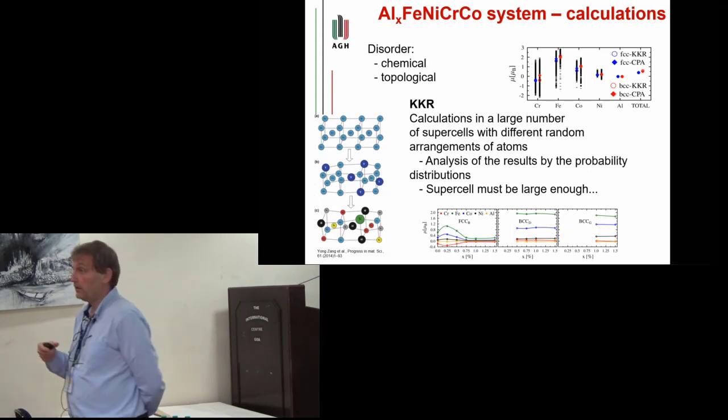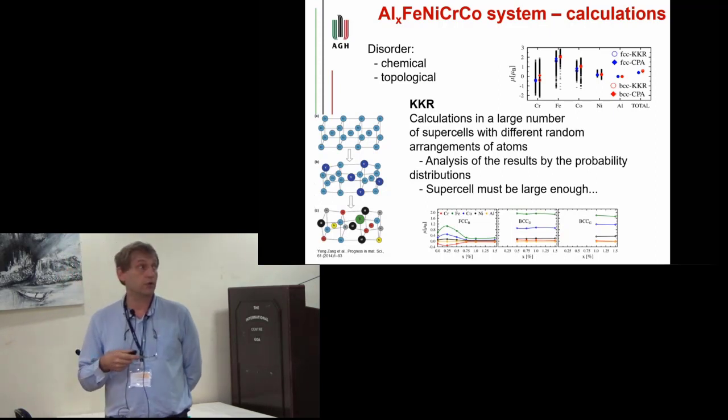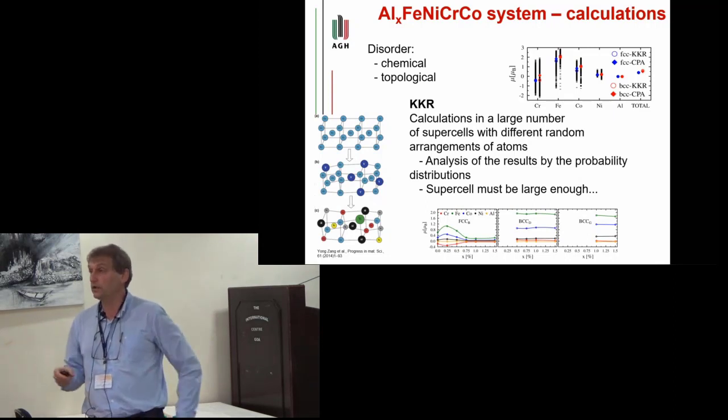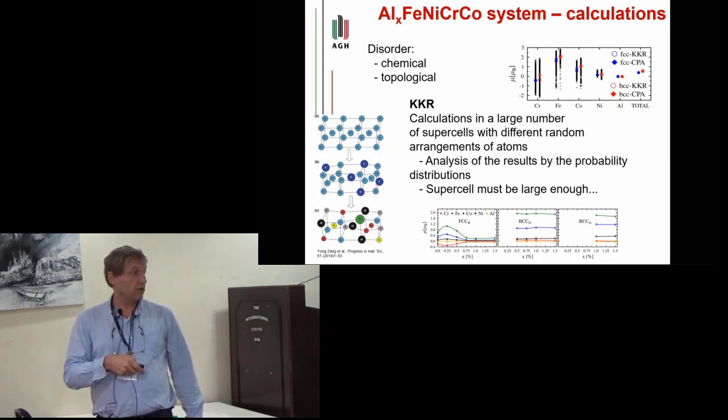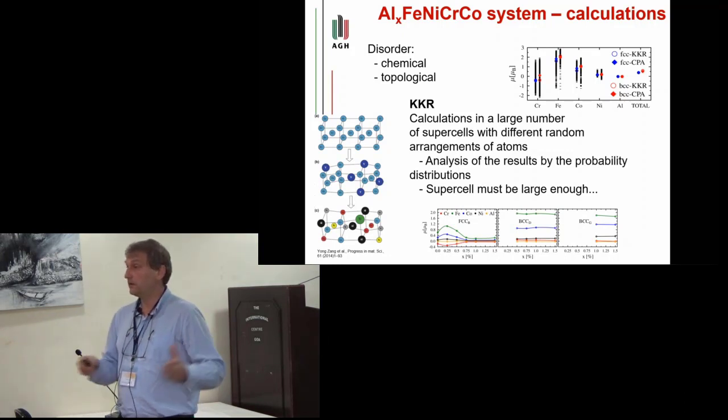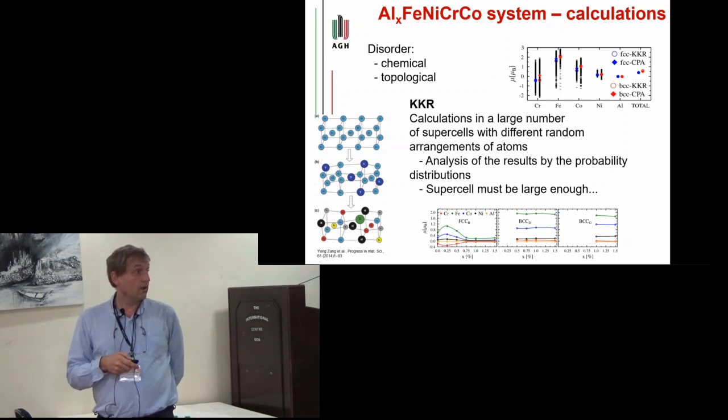In order to explain this, we have performed electronic structure calculations, and we had to take into account two kinds of disorders: chemical disorder, which is connected with the fact that we are putting various atoms on various lattice sites, and the second one, topological disorder, because when you are putting various atoms, you are changing the distances between nearest neighbors. So it is not directly FCC structure—in this case, various atoms are at different distances.